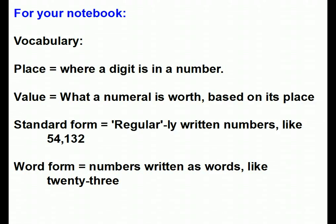We're going to be adding four vocabulary words to your notebook. Give me a second to explain them to you, and then I'm going to want you to pause this video long enough to jot these words down. The first word is place. A place is where a digit is in a number — is it in the tens place, the hundreds place, and so on.